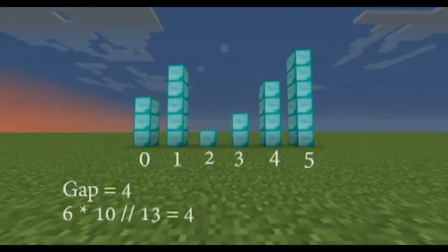We start off by setting the gap size to 4 because 6, which is the length of the array, 6 times 10 divided by 13 floor is 4. That is the formula to determine the next gap size. So the first gap size will be 4.